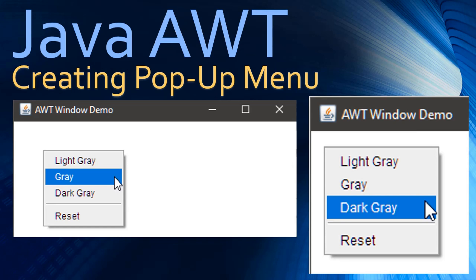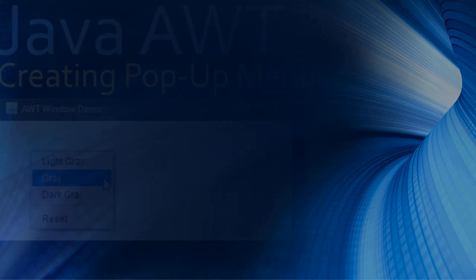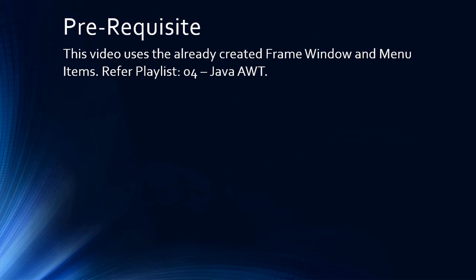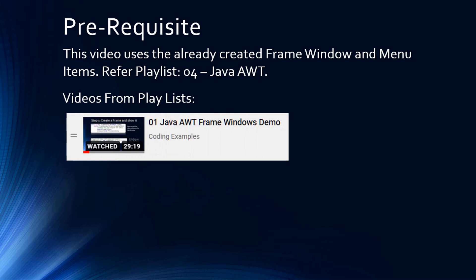Hello friends, welcome to the Java AWT series. Here we are going to create a pop-up menu. When you click a pop-up menu item, the background color of the frame window will change. There is a prerequisite: you have to watch the AWT playlist and watch the very first video to know how to create a frame window, because this video won't discuss creating the frame window. We will create a pop-up menu on top of this frame window.